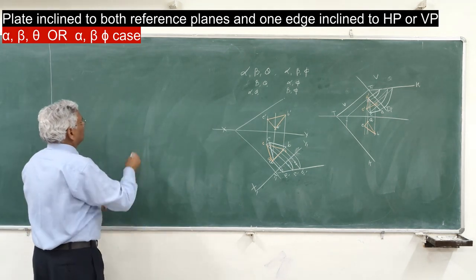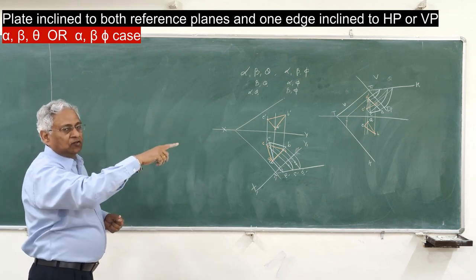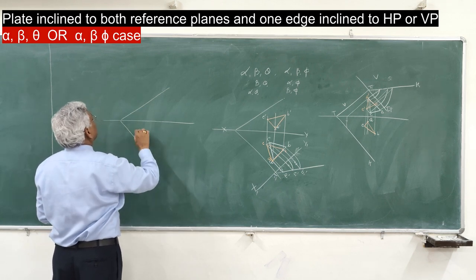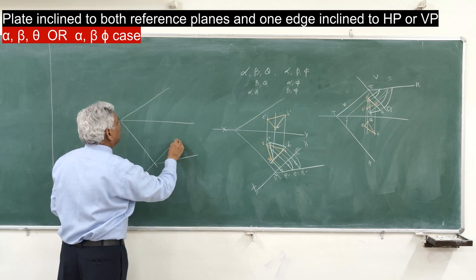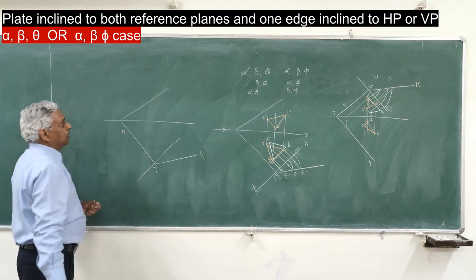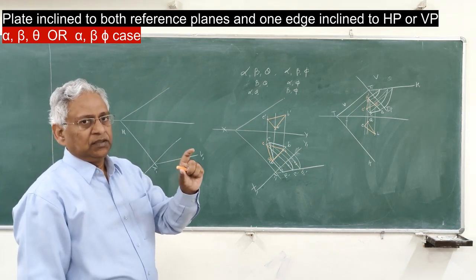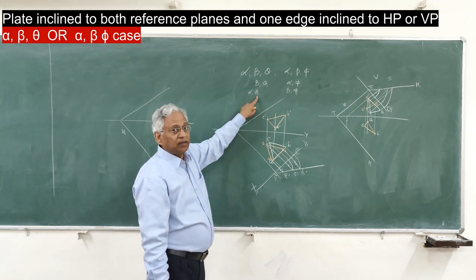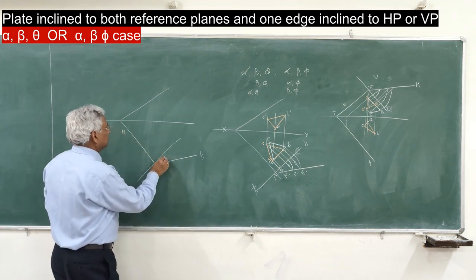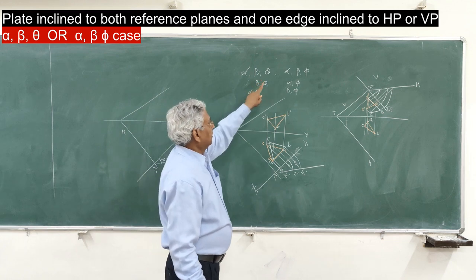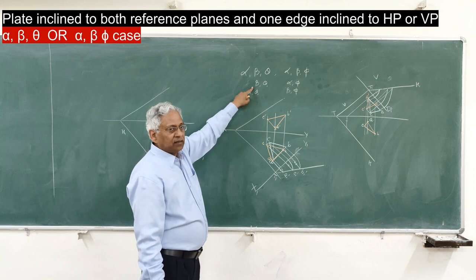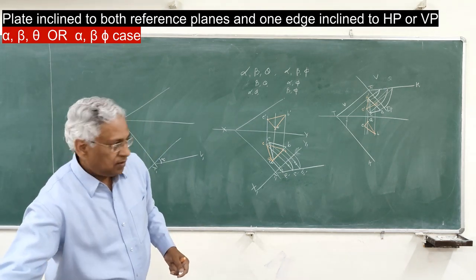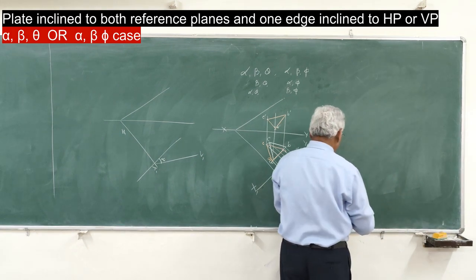First, you draw the vertical trace of the wobbling plane making angle alpha with the reference planes, and then convert this into an inclined plane or AVP. Let us say this is the same plane with X1Y1 as the new ground line. You will recall how you draw the projection of the plate when it is inclined to the fundamental plane and one edge is inclined to the fundamental plane, or the other form — when the plate is inclined to the vertical plane and one edge is inclined to the vertical plane. That is the case we discussed in the last session.